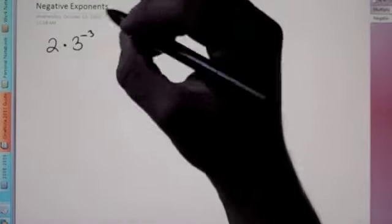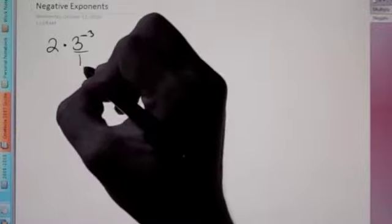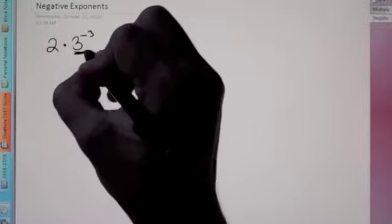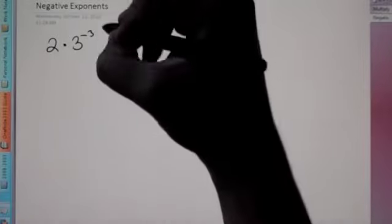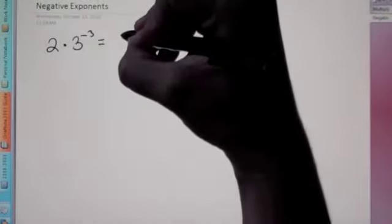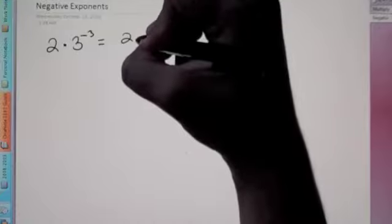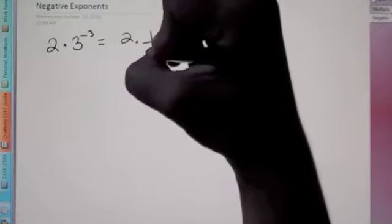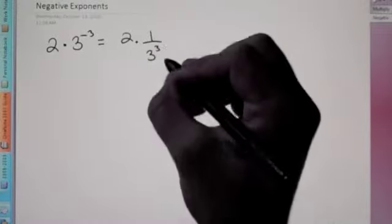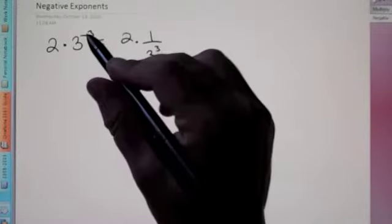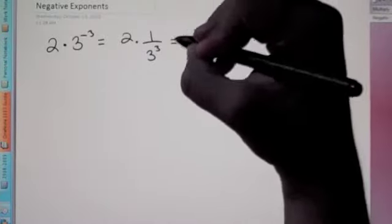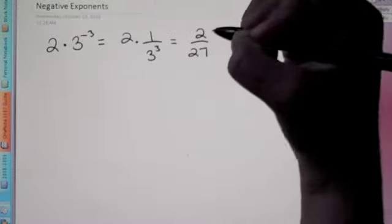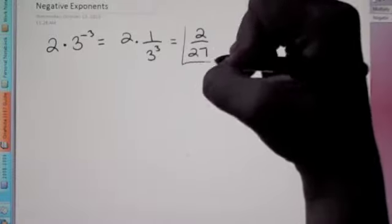Notice this is in a numerator — we could write this over 1 if we wanted to. The way we get rid of negative exponents is flip it to the denominator. If it's in the numerator, switch it to the denominator, but you only switch what's connected to the negative exponent. So the 2 stays on top, and we flip the 3 to the positive 3rd. That's our goal — to get rid of the negative. Now we can combine: 2 times 1 is 2, and 3 to the 3rd is 27 (3 times 3 times 3). So 2/27 is your final answer.